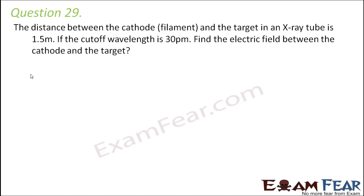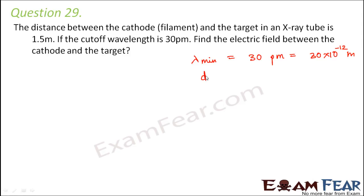Question number 29: The distance between the cathode (filament) and the target in an X-ray tube is 1.5 meters. If the cutoff wavelength is 30 picometers, find the electric field between the cathode and the target. The minimum wavelength is 30 picometers, which equals 30 × 10⁻¹² meters, and the distance is 1.5 meters. First, let us calculate the energy of the radiation.